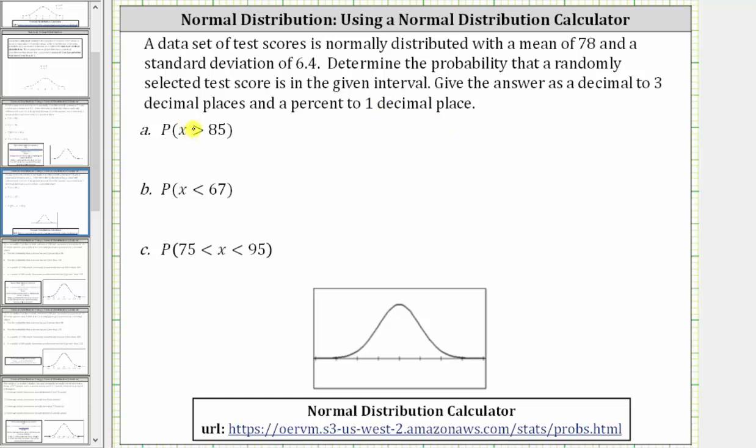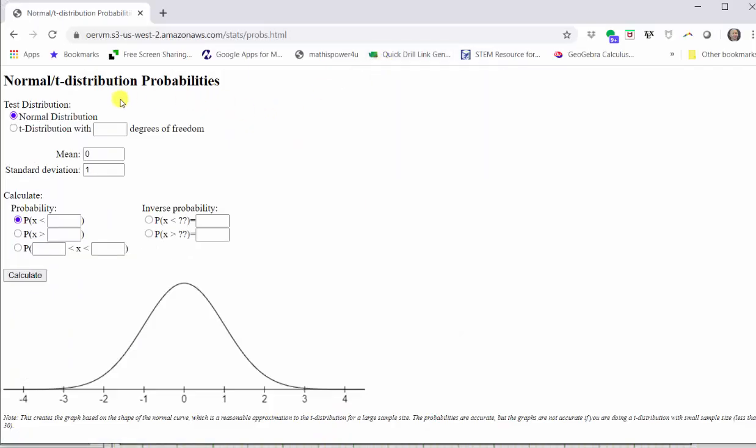For part a, we're asked to find the probability that x, the randomly selected test score, is greater than 85. Let's go to the calculator. The first step is to select normal distribution at the top. Next, we enter the mean and standard deviation.